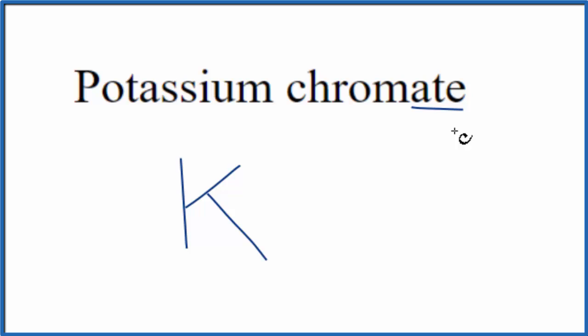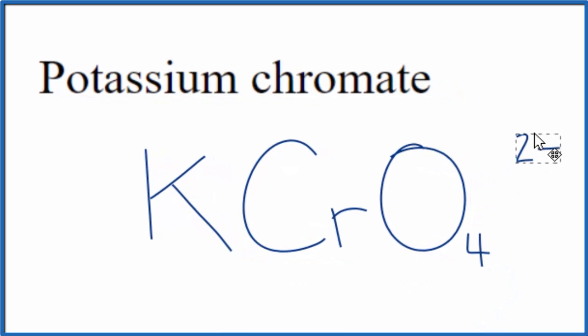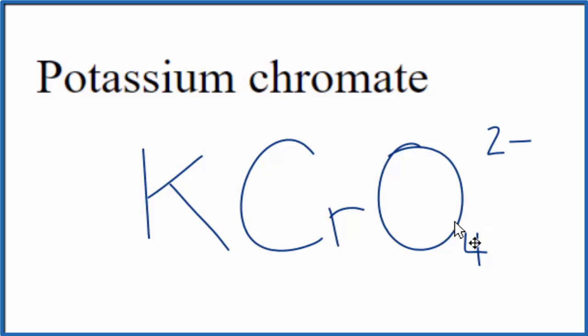For chromate, it ends in A-T-E, so you're not going to find this on the periodic table. You've either memorized that the chromate ion, that's CrO4, with a 2- ionic charge, or, if you're allowed, you could look it up on a table of polyatomic ions.